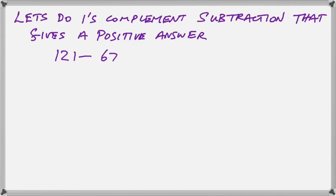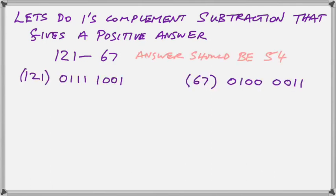Let's do one more 1's complement subtraction. And this one we will do to give us a positive answer. This time we will take a smaller number from a larger number. We're going to take the 67 from the 121. And our answer should be, when we've done it correctly, 54. So what have we done? We have, in fact, converted our numbers to binary.